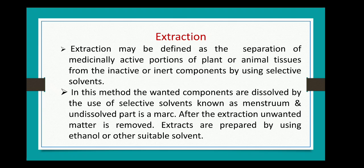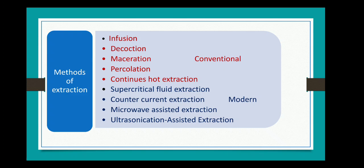For example, if you want to extract alkaloids from a crude drug, the choice of solvent will be chloroform because alkaloids are soluble in chloroform. In this method, the wanted components are dissolved by the selective solvent known as menstruum, and the undissolved part is known as marc. After extraction, the marc is removed and extracts are prepared using suitable solvents.